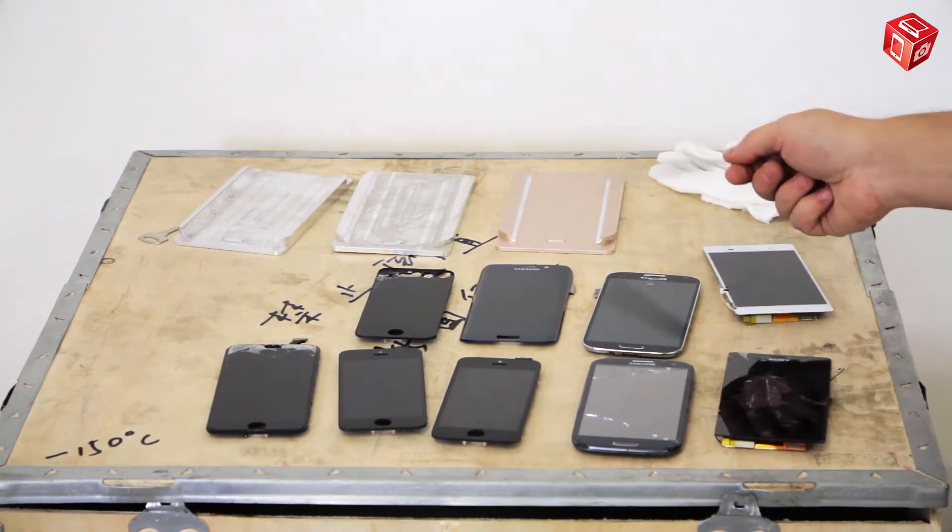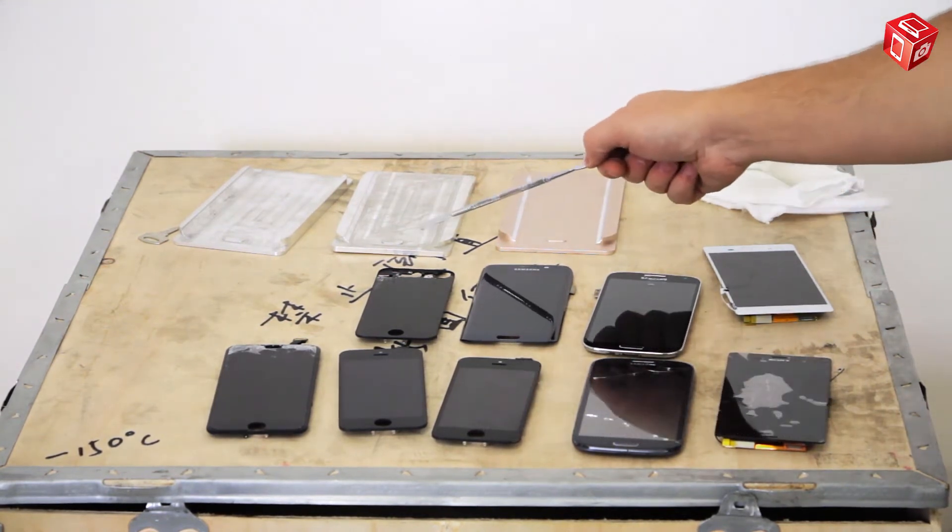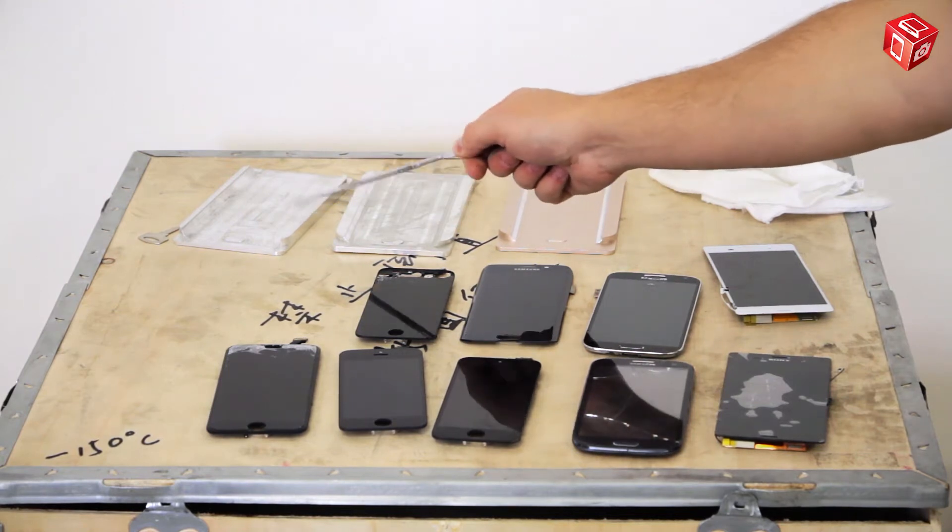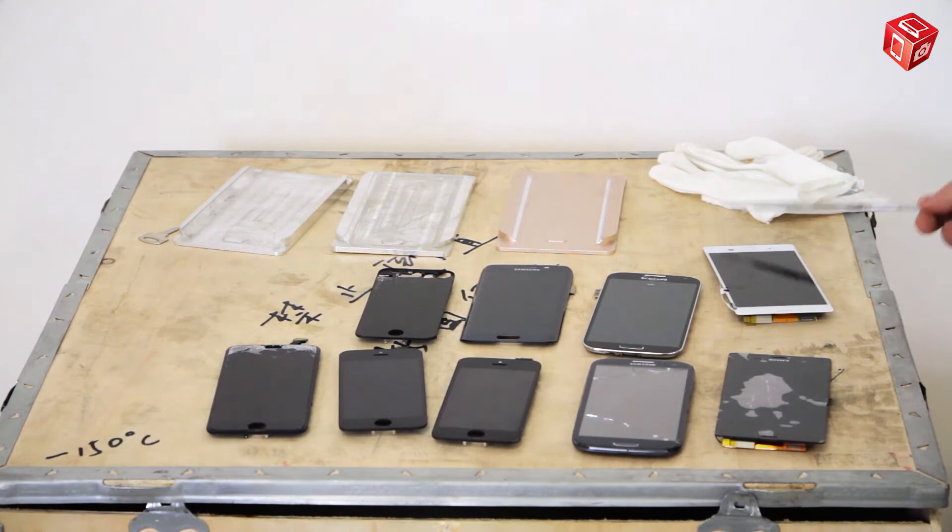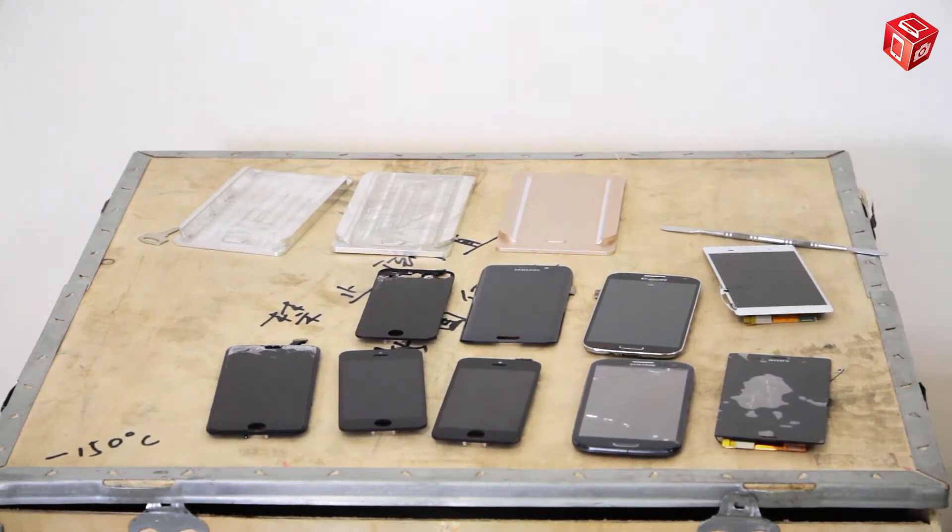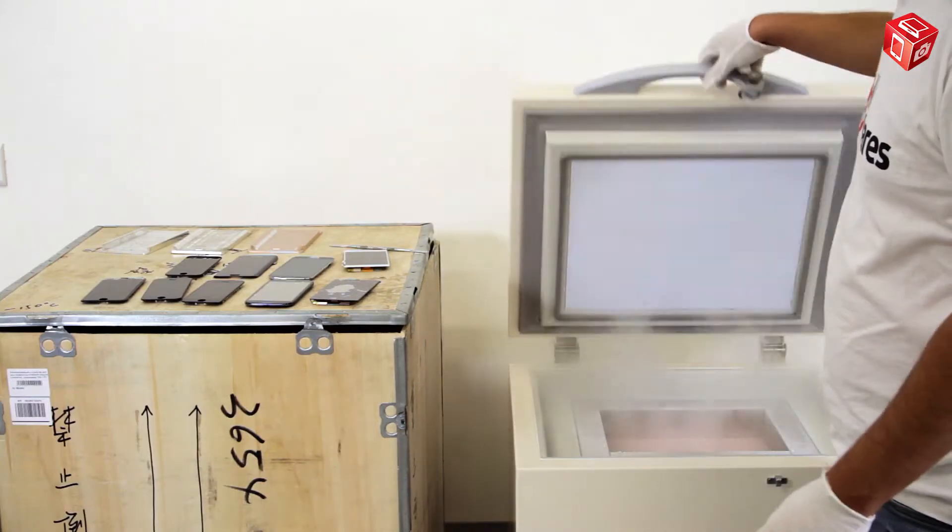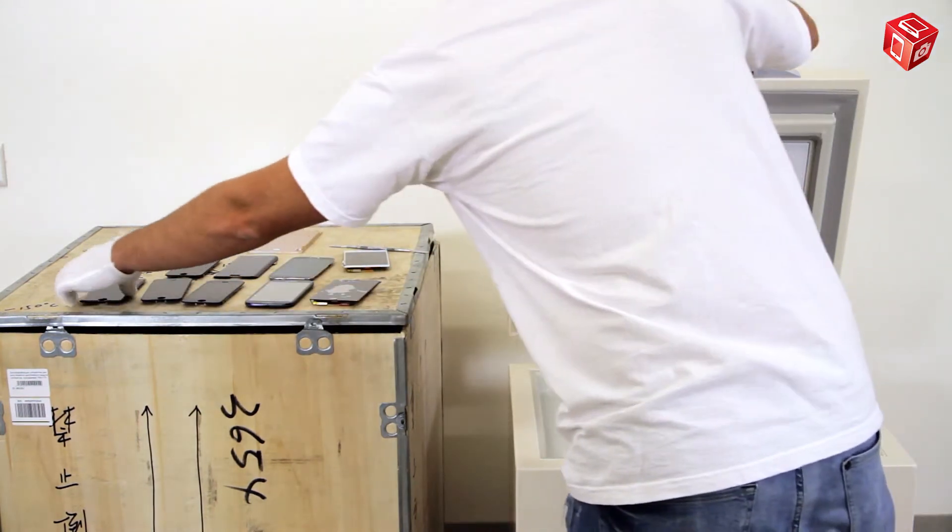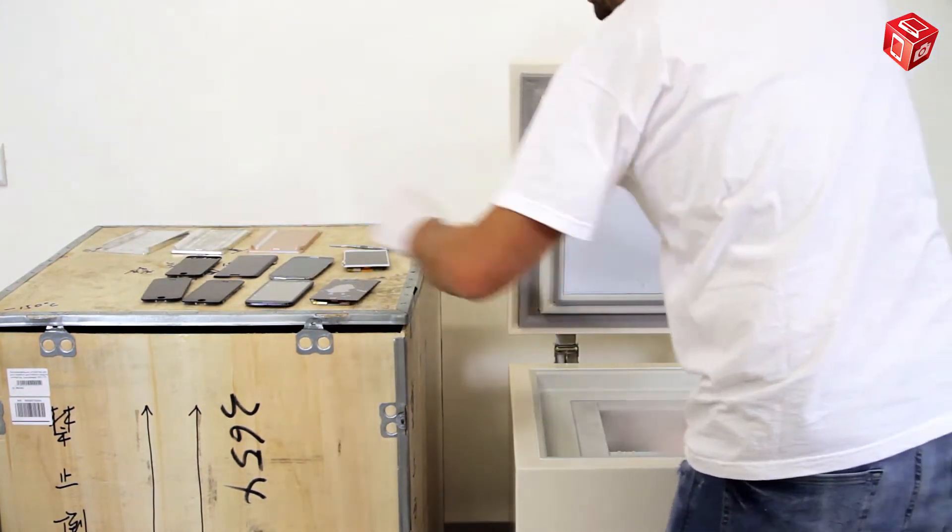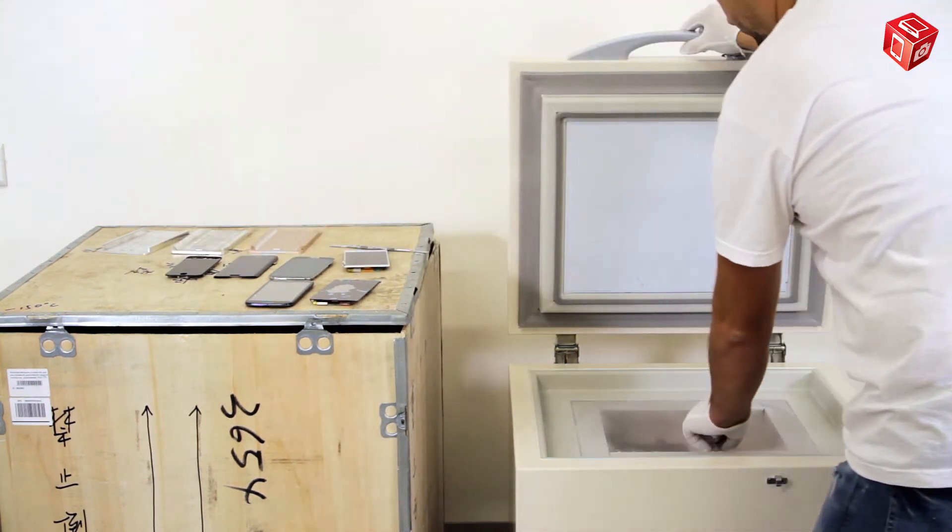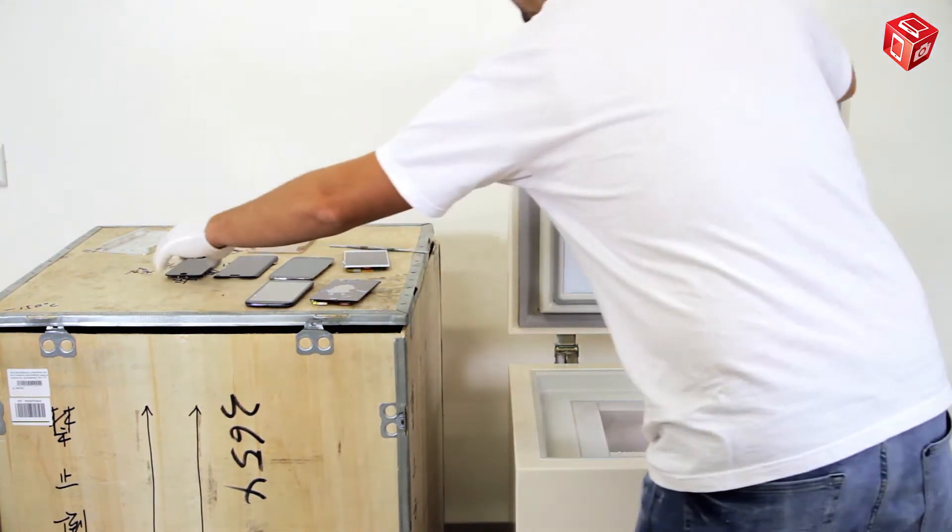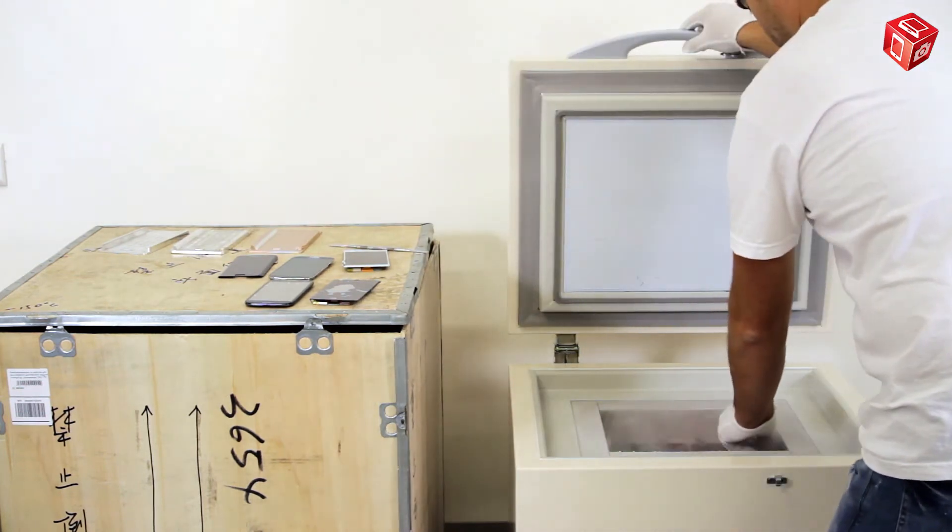The freezer also comes with trays for ungluing Samsung Galaxy S6 Edge, S7 Edge, and Note Edge smartphones. Let's start with the display modules for iPhones. Put the displays into the chamber, glass down. Close the lid and leave it there for two minutes.